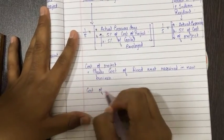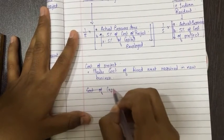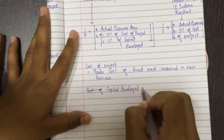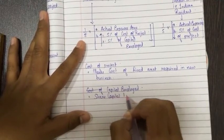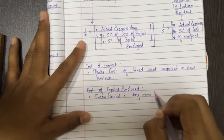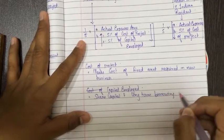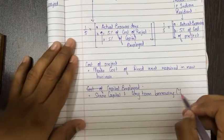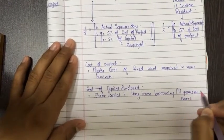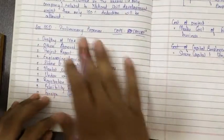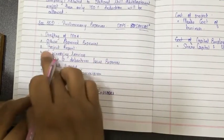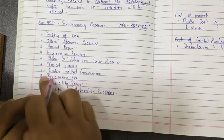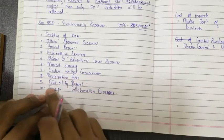Cost of capital employed is equal to share capital plus long-term borrowings. Long-term borrowings means seven years or more. Our entire theory for Section 35D — that is preliminary expenses — is covered in these two pages, including drafting of MOA and other approved expenses.